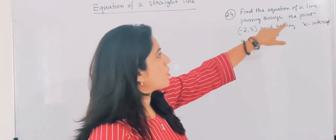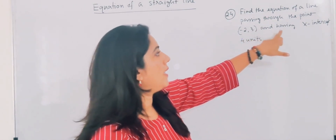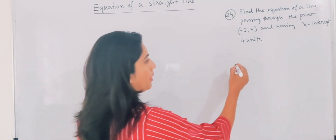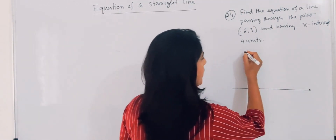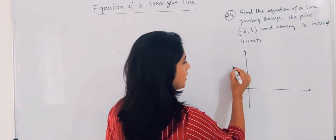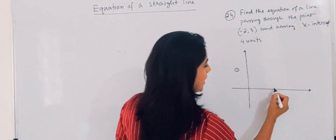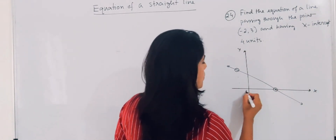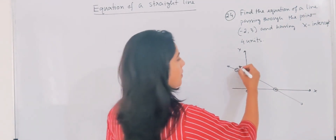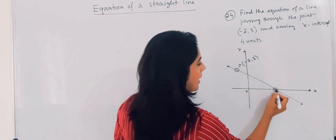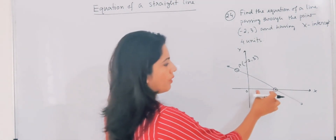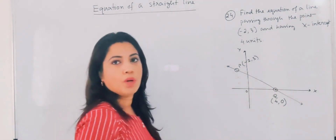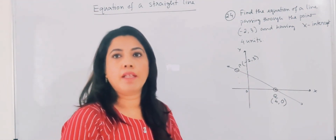Question 24. Find the equation of a line passing through the point (-2, 3) and having X-intercept 4 units. This is also a very important sum — it has come in the 2002 board paper. The point (-2, 3) is given, and X-intercept 4 means the line passes through (4, 0) as well, since the Y-coordinate is 0 at the X-intercept. So we got two points and we can find the equation of the line by the two-points form.